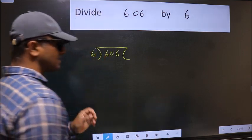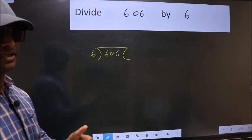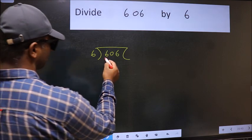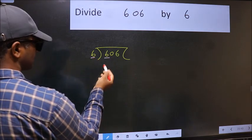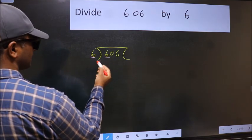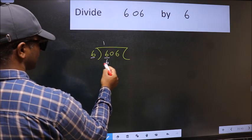This is your step 1. Next, here we have 6, here also 6. When do we get 6 in the 6 table? 6 once is 6.